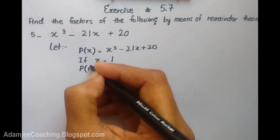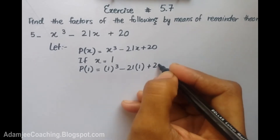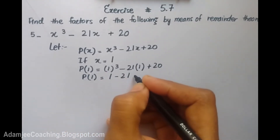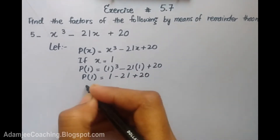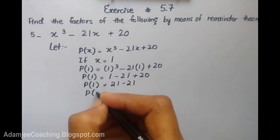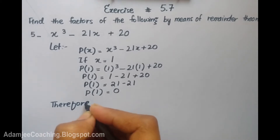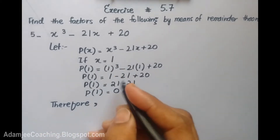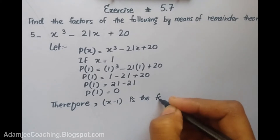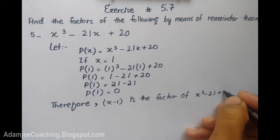Here we have p(1) is equal to 1 cube minus 21 times 1 plus 20. So that is 1 minus 21 plus 20, which gives p(1) is equal to 0. It means that x equals 1, so x minus 1 is a factor of x cube minus 21x plus 20.